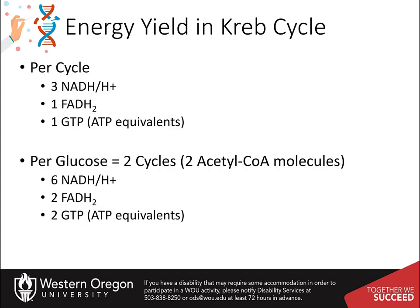Overall, the total energy yield in one turn of the citric acid cycle is three molecules of NADH plus three protons, one FADH2, and one GTP, or an ATP equivalent. This is doubled for the energy potential in one glucose molecule, as two molecules of acetyl-CoA will enter the Krebs cycle.